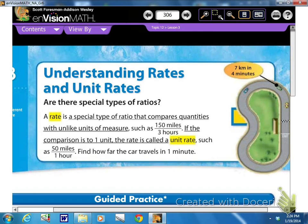Alright, two vocabulary words. You're going to have to get down the definition, so if you need to pause me, pause me. Are there special types of ratios? Well, we have a rate. A rate is a special type of ratio that compares quantities with unlike units of measure. So it's comparing two quantities that have unlike units of measure.